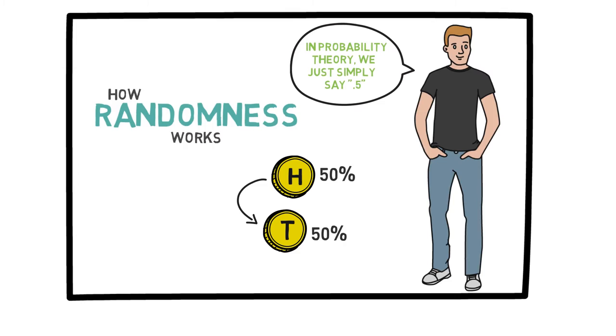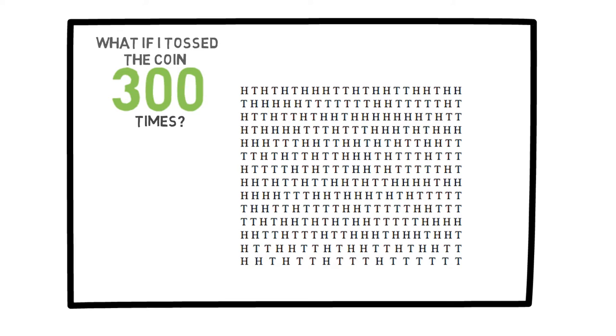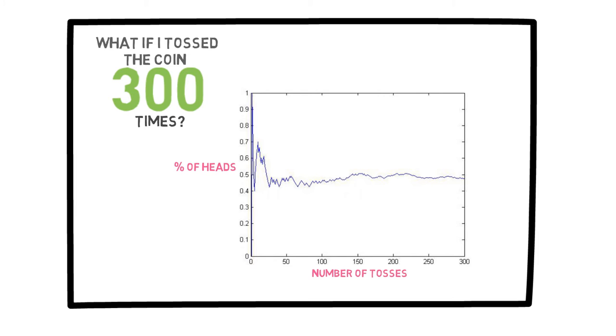Now, if I toss this coin many times, what happens? I have done just that using a computer simulation, where I toss the coin 300 times. The first thing we notice and expect is that, as the number of coin tosses increases, the portion of heads grows closer and closer to 50%.